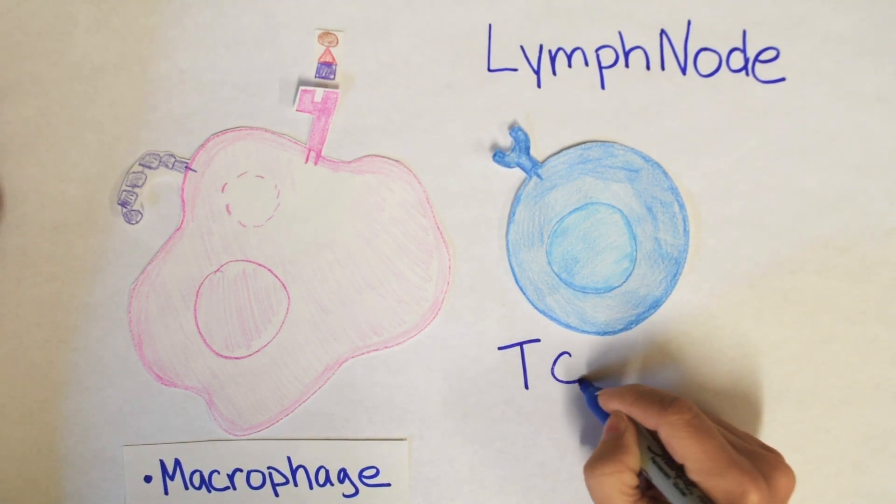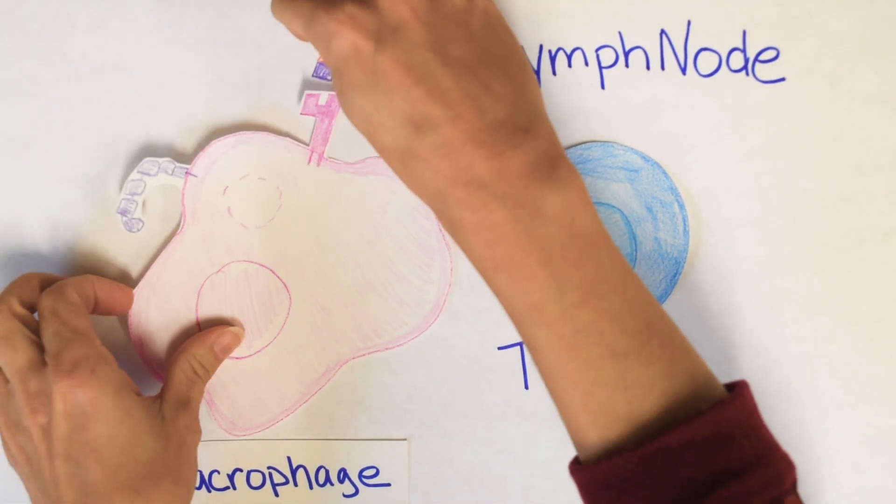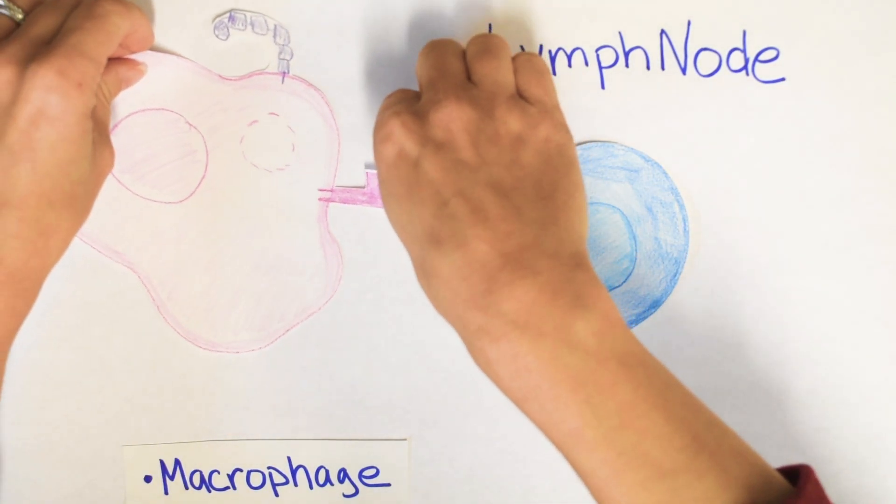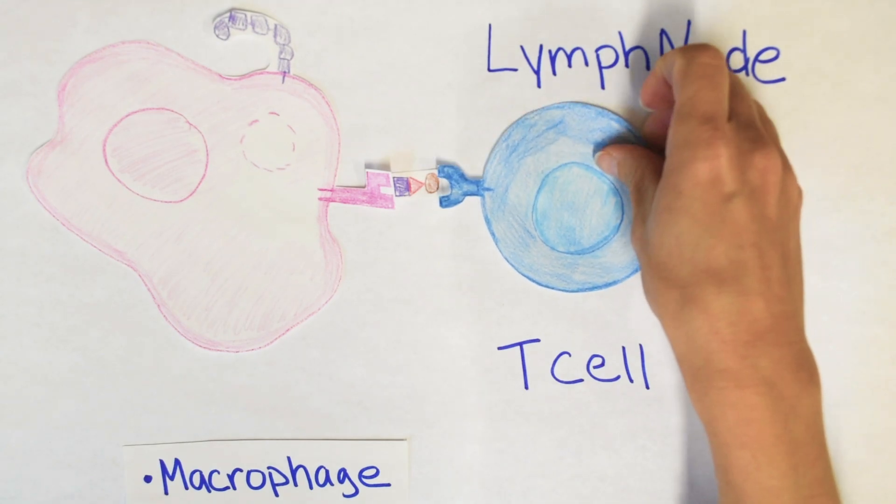Now, macrophages actually have no long-term memory of defeating the bacteria, but B cells and T cells can remember anywhere from one year to your entire lifetime what bacteria, viruses, and fungi they have encountered. So here we go.